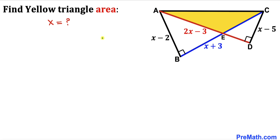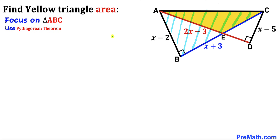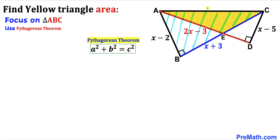Let's get started. Before we find the area of this yellow triangle we must find the value of x first. Let's focus on right triangle ABC whose side lengths are x minus 2 and x plus 3. We'll apply the Pythagorean theorem: A squared plus B squared equals C squared, and in our case AC is our longest leg.